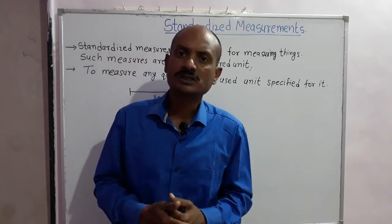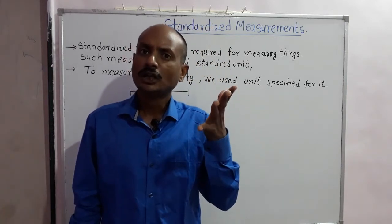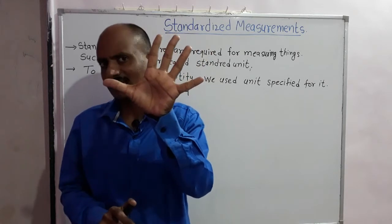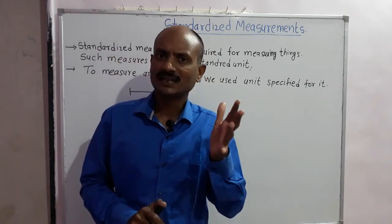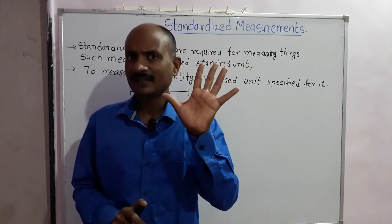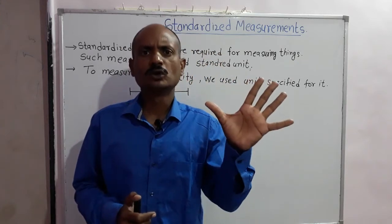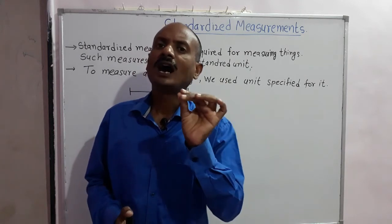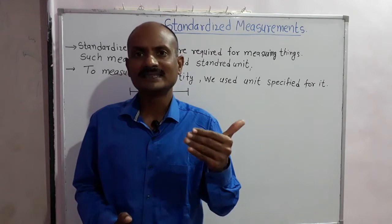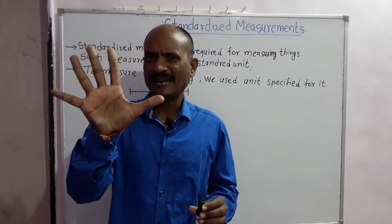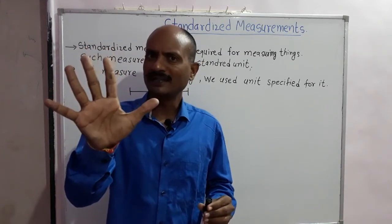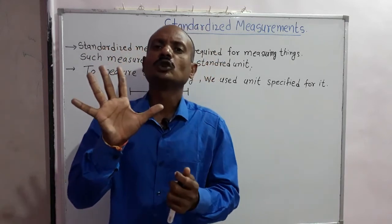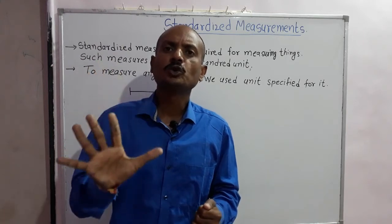Suppose a hand span is used as a unit for measuring length. If we measure the length of a cloth as two hand spans, three hand spans, or four hand spans, the length measured by each person will be different. If I measure 2 spans and you measure 2 spans, the length of the cloth will differ because our hand sizes are different. So this hand span is not suitable as a standard unit.